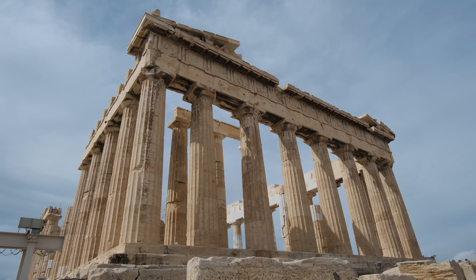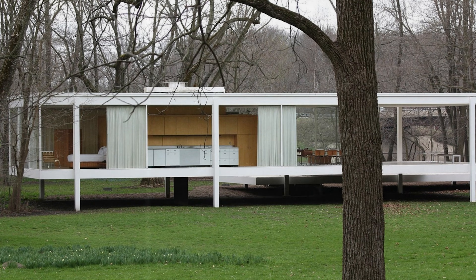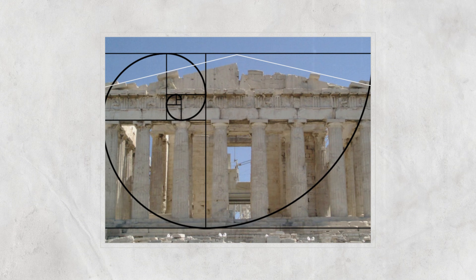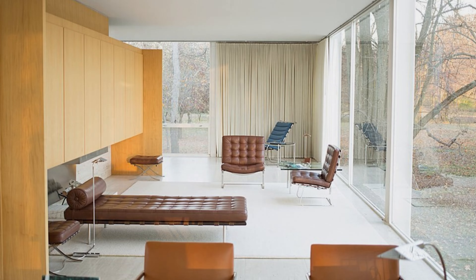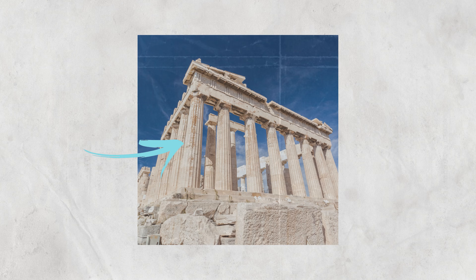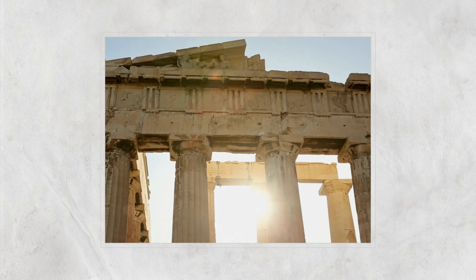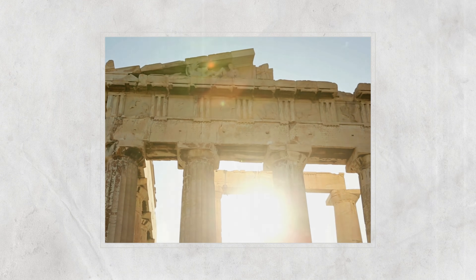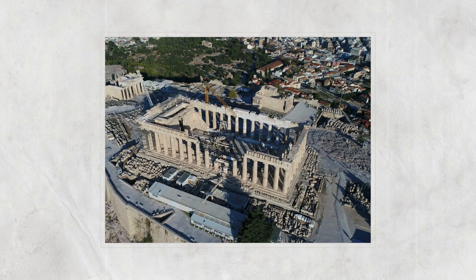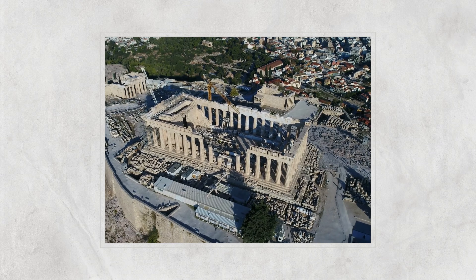The Parthenon is considered one of the finest examples of Greek architecture and is renowned for its proportional harmony. The Parthenon's design incorporates the principles of classic Greek architecture, including the use of the golden ratio, a mathematical ratio found in nature believed to create visual harmony. The building facade is divided into three sections with the middle section slightly larger than the two flanking sections, creating a sense of balance. The columns that support the roof also demonstrate proportional harmony — wider at the base and tapering towards the top, creating a sense of upward movement. The building's proportions are carefully calibrated to remain visually stunning more than two millennia after its construction.